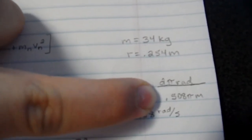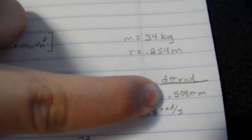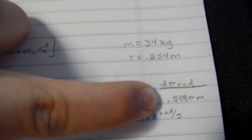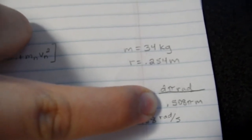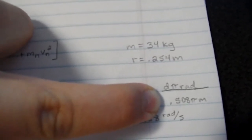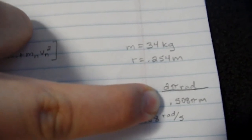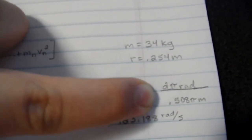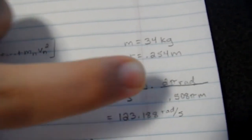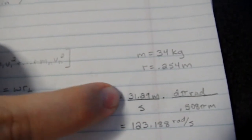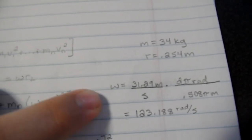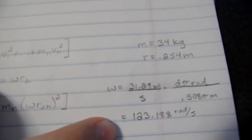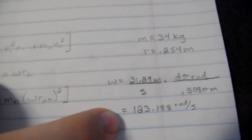Now, this makes sense because this 0.508π meters is our circumference, and it can be understood that if you kind of break up the circle into a line and you stretch it, that this would be traveling 0.508π meters for every time that there is one revolution. So, our units cancel out, we get radians per second, which is what the angular speed is, and numerically we get 123.188.